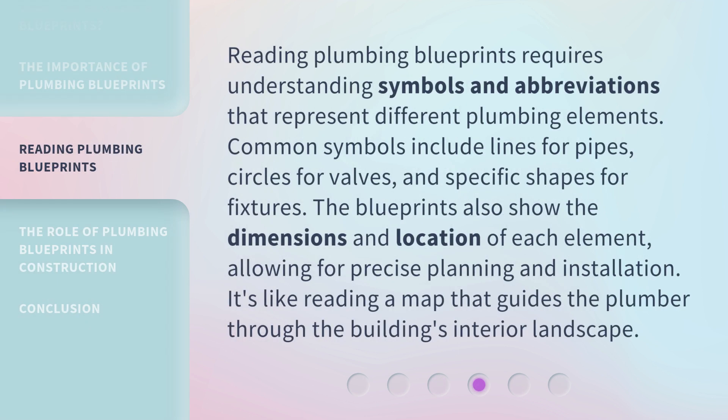Reading plumbing blueprints requires understanding symbols and abbreviations that represent different plumbing elements. Common symbols include lines for pipes, circles for valves, and specific shapes for fixtures. The blueprints also show the dimensions and location of each element, allowing for precise planning and installation. It's like reading a map that guides the plumber through the building's interior landscape.